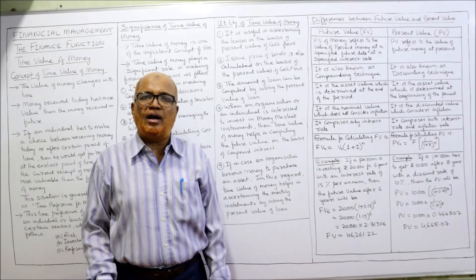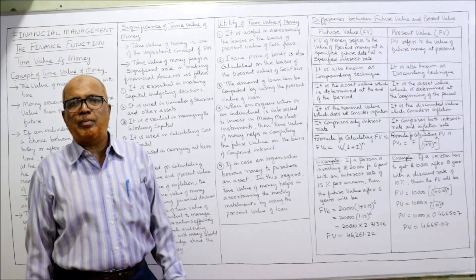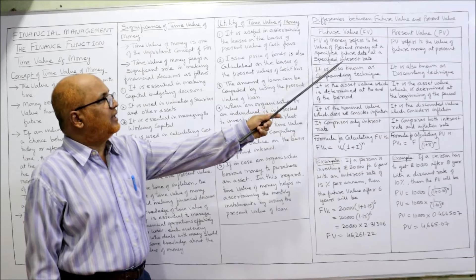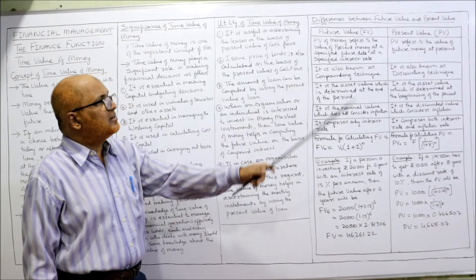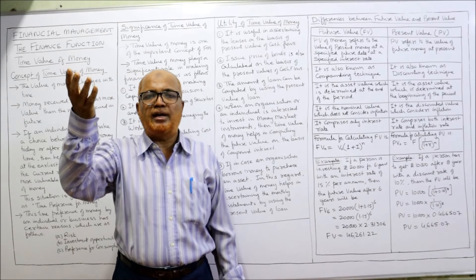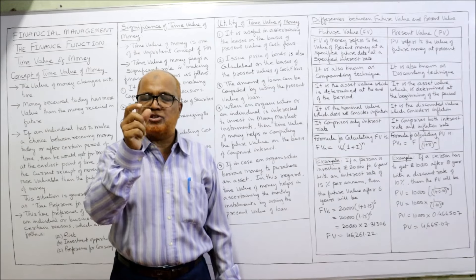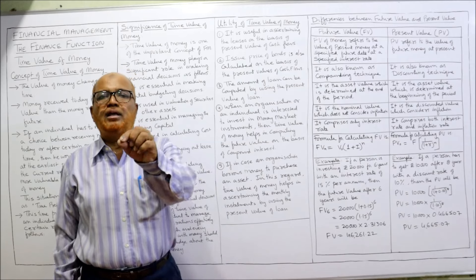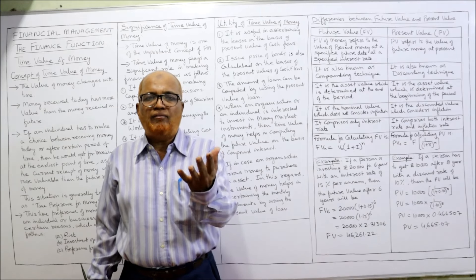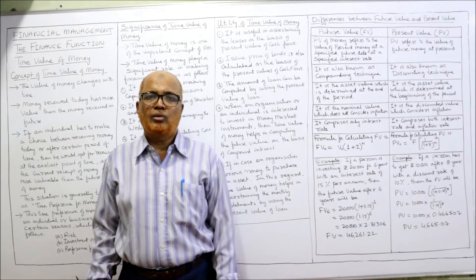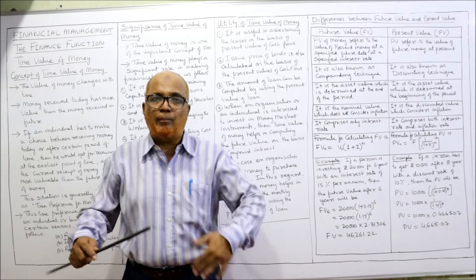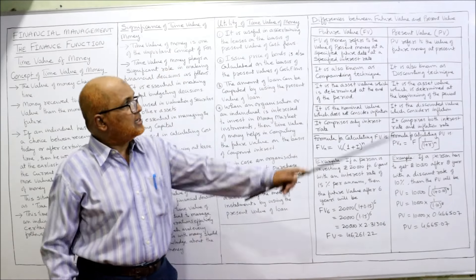In an examination, a question may be asked about the differences between present value and future value. Here, I will explain the difference in tabular form. Future value refers to the value of present money at a specified future date at a specified rate of interest. For example, if you invest 10,000 rupees in a bank at a compound rate of interest of 10 percent, the value of that deposit after 5 years is called future value — presently you deposit 10,000 and you get the amount after 5 years at 10 percent compound interest.